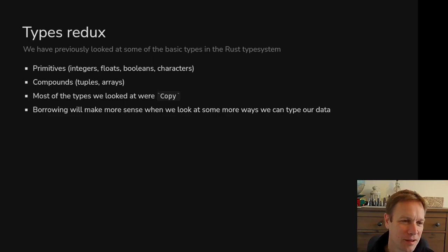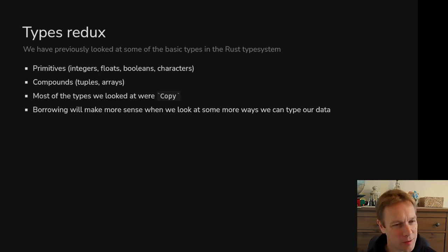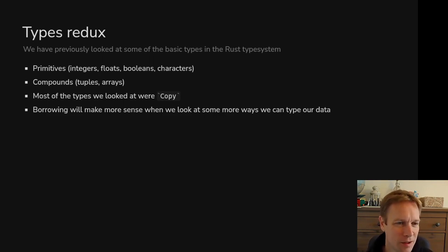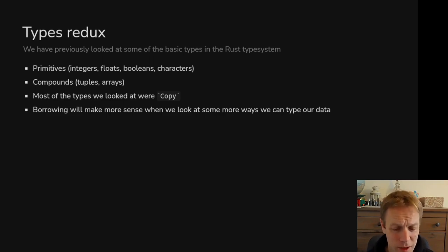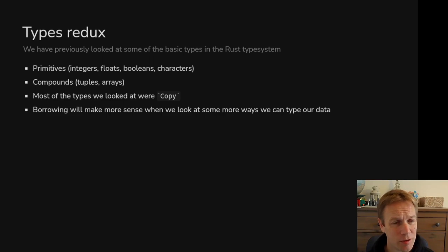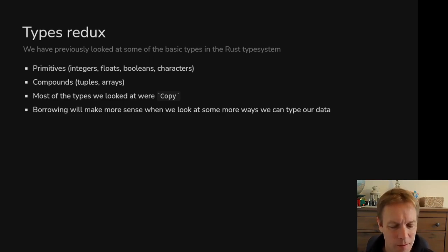Here are some types we looked at. Primitives, like integers, floats, booleans, characters. And then compound types — types that you make by sticking together primitives or other things. We looked at tuples and arrays. Both of them are fixed length. Arrays have everything of the same type, whereas a tuple is just a way of grouping together things of specific types.